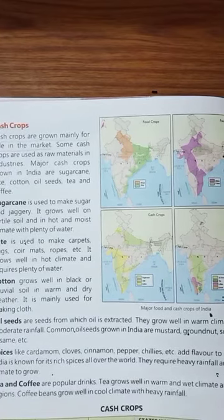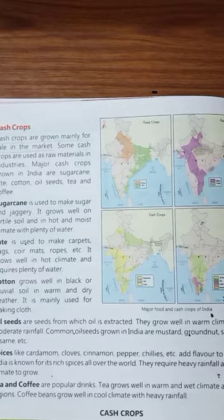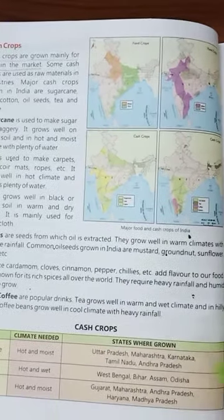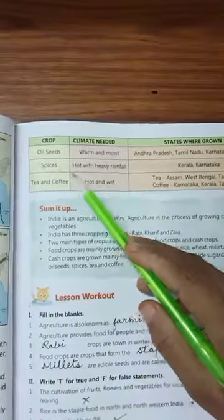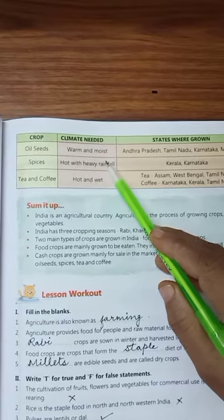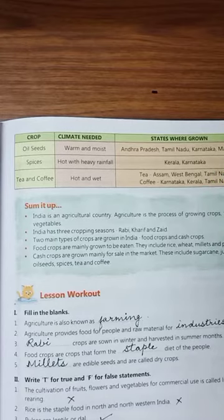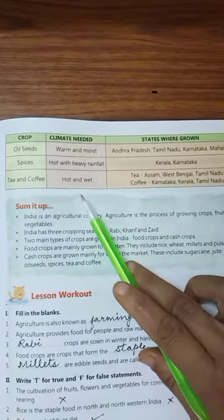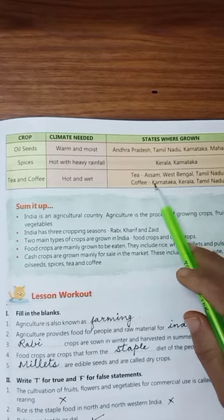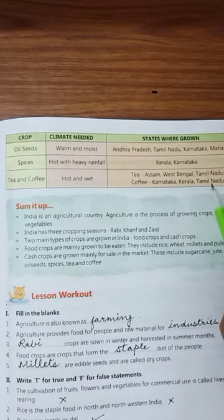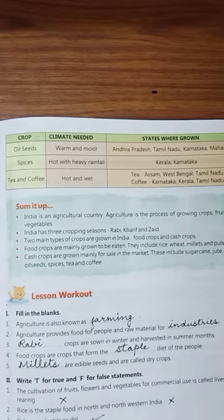For cash crops, the same information is given — climate needed, crop name, and states where it grows. Oilseeds need warm and moist climate and grow in Andhra Pradesh, Tamil Nadu, Karnataka and Maharashtra. Tea and coffee require hot and wet climate. Tea grows in Assam, West Bengal and Tamil Nadu. Coffee grows in Karnataka, Kerala and Tamil Nadu.